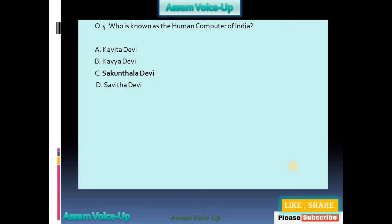Our fourth question: Who is known as the Human Computer of India? Four options available: A: Kavita Devi, B: Kabaya Devi, C: Shakuntala Devi, D: Sabhita Devi. Our correct answer is Shakuntala Devi.